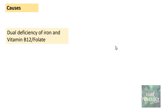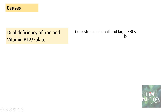The most important and most common cause of dimorphic anemia is combined deficiency — a dual deficiency of iron and vitamin B12 or folate. These deficiencies combine so that you find two different populations: iron deficiency produces microcytic RBCs, and vitamin B12 deficiency produces macrocytes, because the mechanisms of formation are different. So you have co-existence of small RBCs and large RBCs, leading to a dimorphic blood picture.